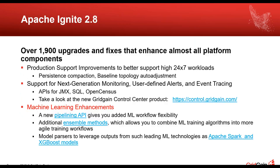Just a quick word about Apache Ignite 2.8: over 1,900 upgrades and fixes, so it's a major enhancement from the earlier version. The enhancements span the entire platform but focus in three areas. The first is production support — those who've worked with Ignite know we're very good at supporting very large installations, and we've continued to enhance those areas to better support 24x7 mission-critical workloads.